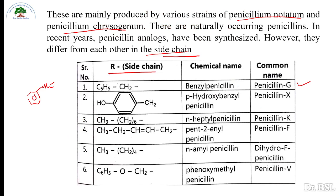The chemical name is benzyl penicillin G. When we replace R with different structures, we get different types of penicillin such as penicillin X, penicillin K, penicillin F, etc.